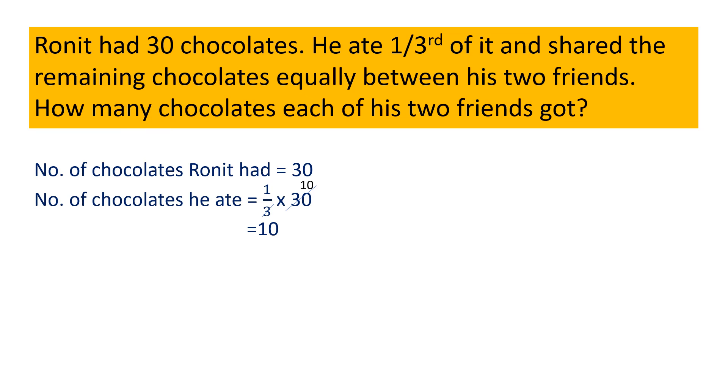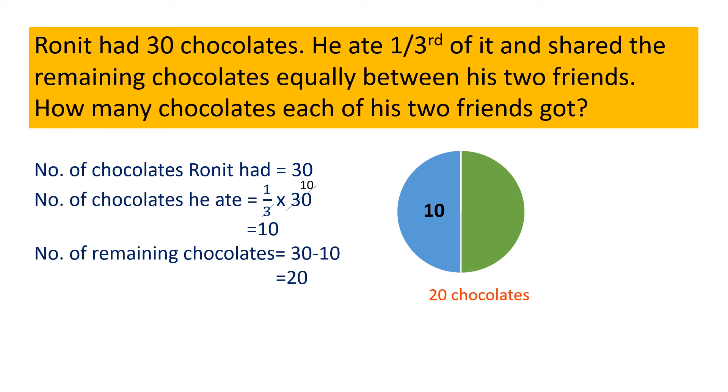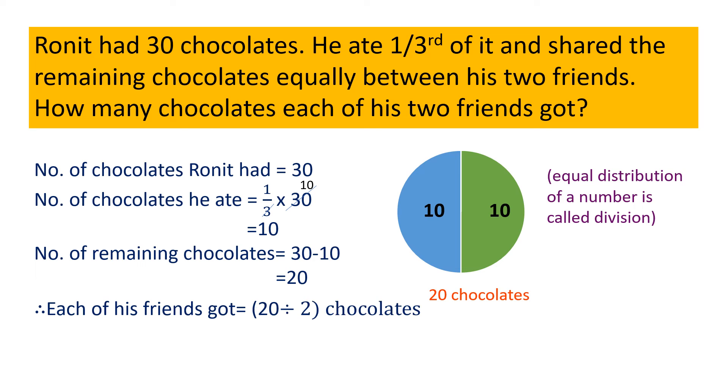Now, the remaining chocolates are equally shared between his two friends. So, the number of remaining chocolates equal to 30 minus 10 equal to 20. This 20 chocolates are shared equally between his two friends. We know that equal distribution of a number is called division. So, each of his friends got 20 divided by 2 equal to 10 chocolates.